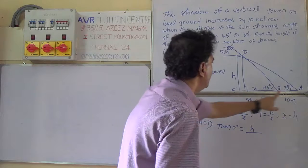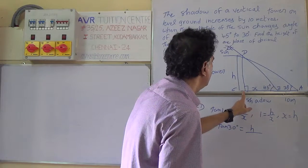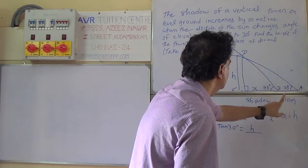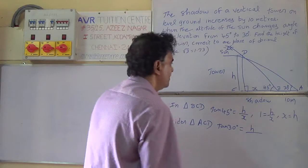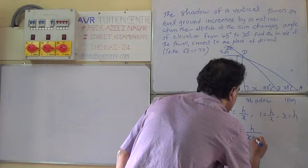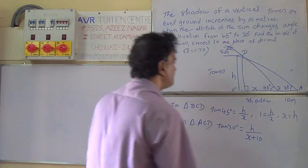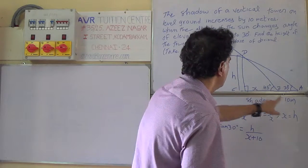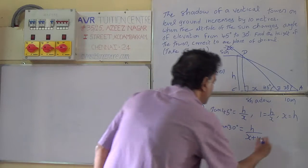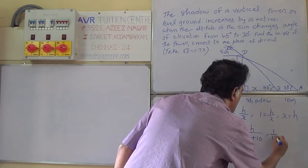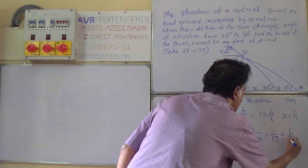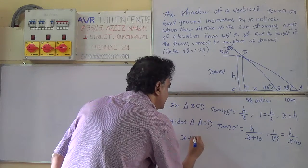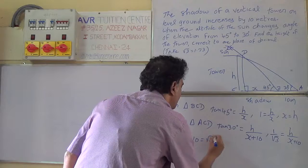The adjacent side to the 30 degree angle is CA. CB is X and BA is 10 meters, therefore the adjacent side is X plus 10. Tan 30 is 1 by root 3, which equals H by X plus 10. Cross multiplying gives X plus 10 equals root 3 times H.